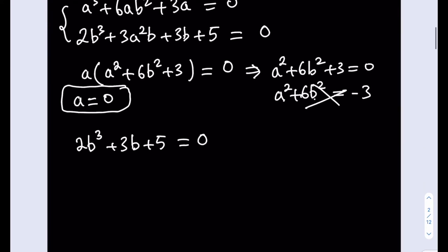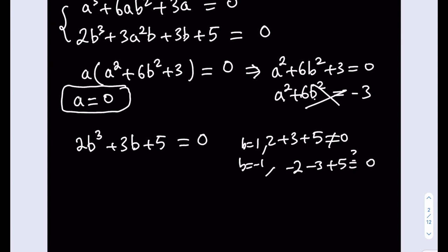Moreover, this is a factorable equation. When you see a cubic with integer coefficients, you first test the factor theorem — what are the divisors of 5? They are ±1 and ±5. Testing b = 1: 2 + 3 + 5 ≠ 0. Testing b = −1: −2 − 3 + 5 = 0. Yes, b = −1 works. But is it the only solution? At least it's one of them.